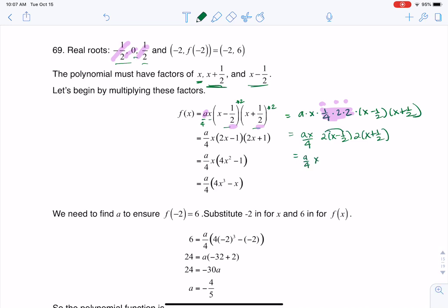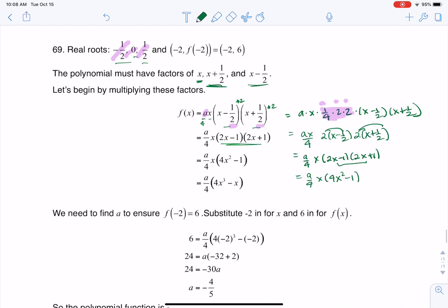And if I start to do this a little bit more, I could just make this a over 4 times x. When I distribute that 2, I'm going to have 2x minus 1. When I distribute this 2, I'm going to have 2x plus 1. And so that's where you see this line coming from. And then when I foil these together, I have a over 4, we have an x, and then outer and inner cancel, so I get 4x squared minus 1. And then I go ahead, and I'm going to distribute this x through. So I'm looking ultimately at a over 4, and then we had 4x cubed minus x.